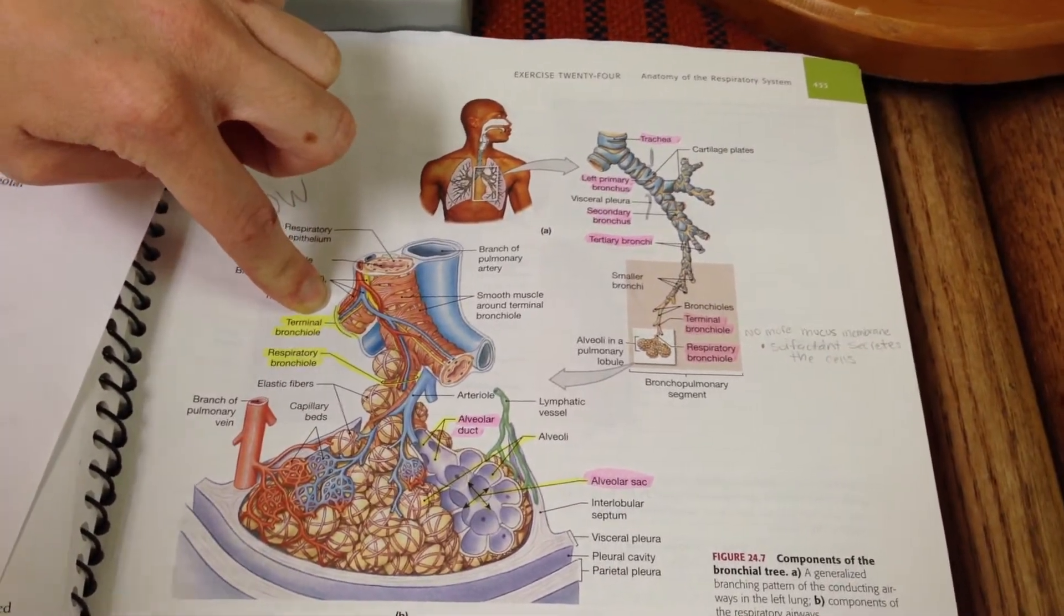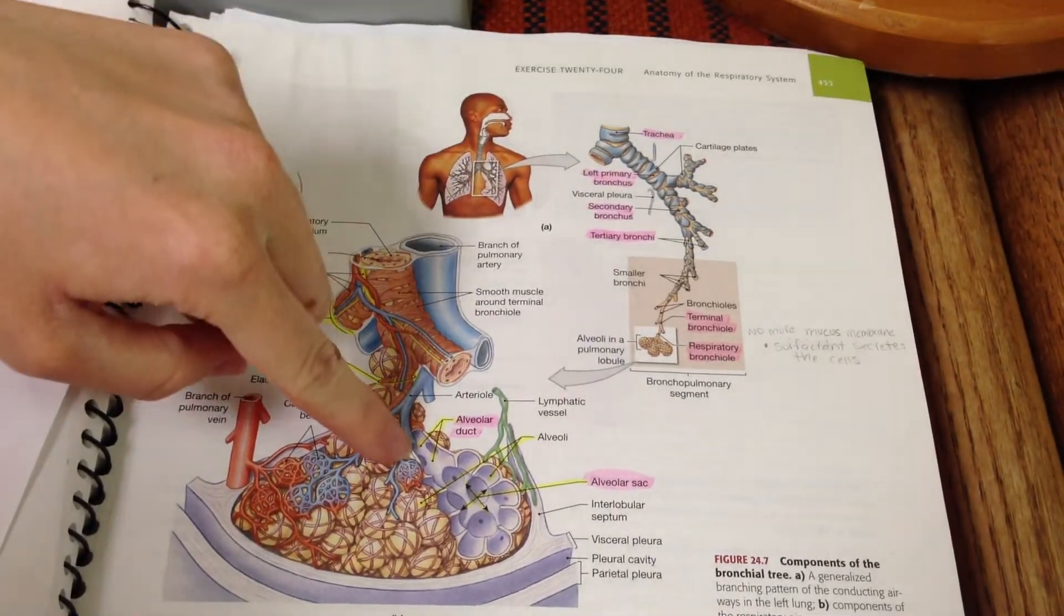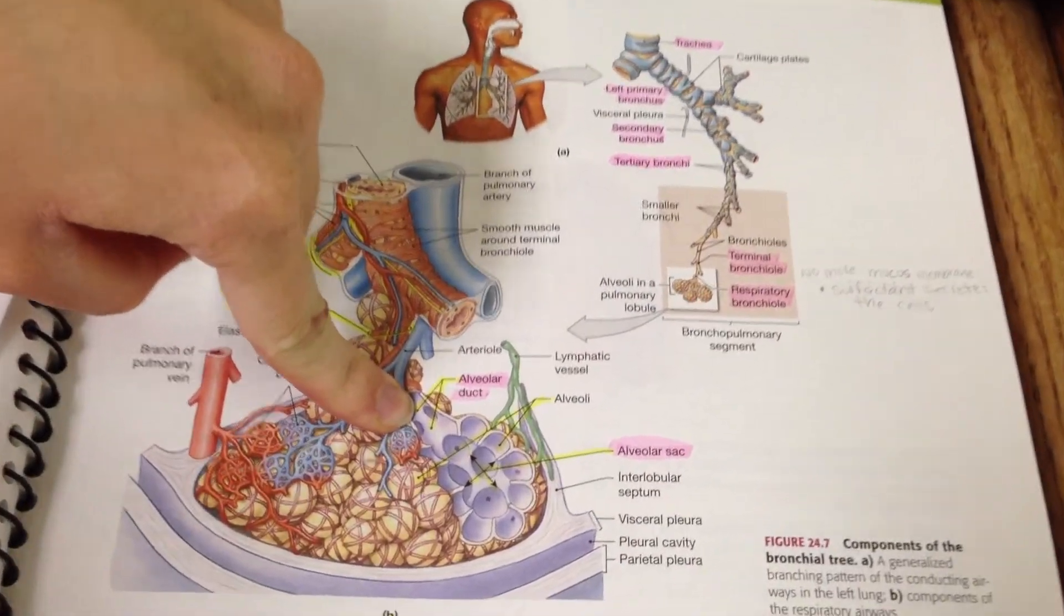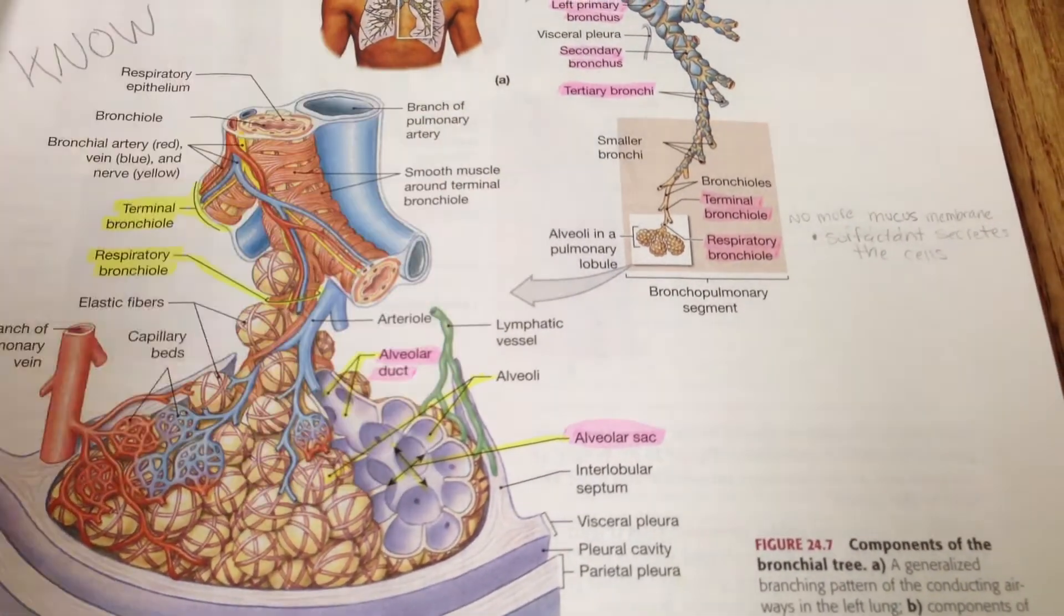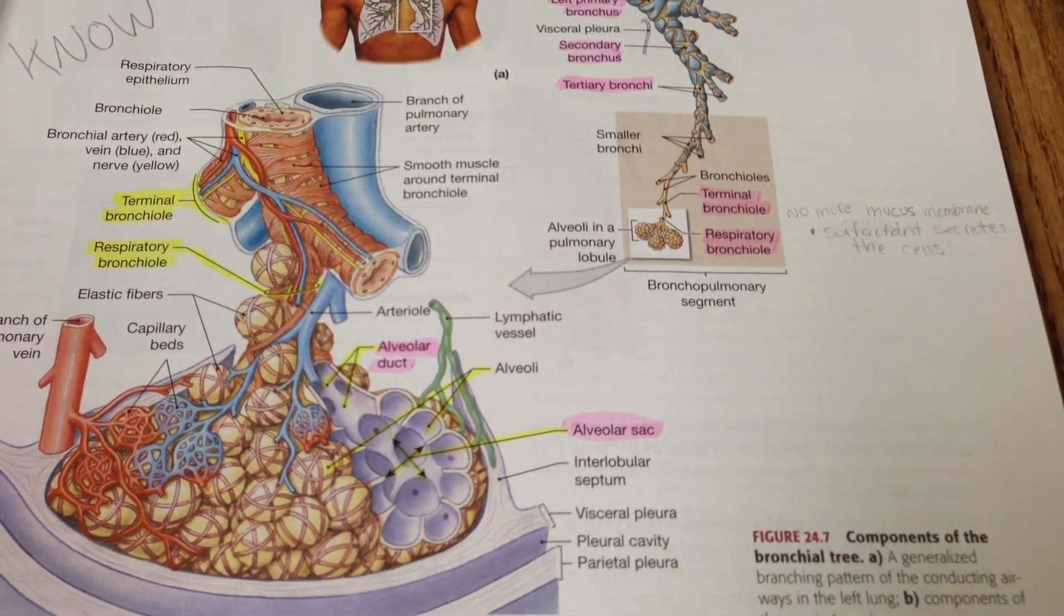And then it goes to the alveolar ducts, which are right here, and then through the alveolar ducts to the alveolar sac, which is this whole thing, and then the alveoli, which is where gas exchange occurs.